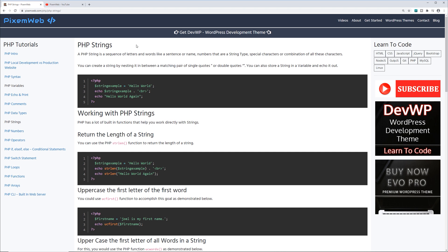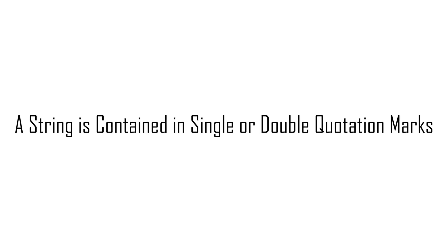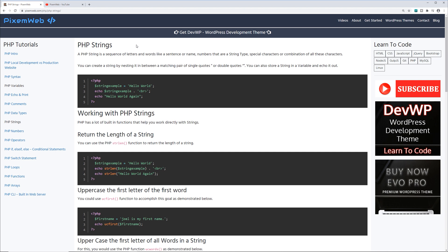So what is a string within PHP? It's a sequence of letters and words that make up a sentence or a name, numbers that are of a string type, and special characters or combination of characters. You can create a string using either single or double quotation marks, store a string within a variable, and output it to the browser using either the echo or print construct.